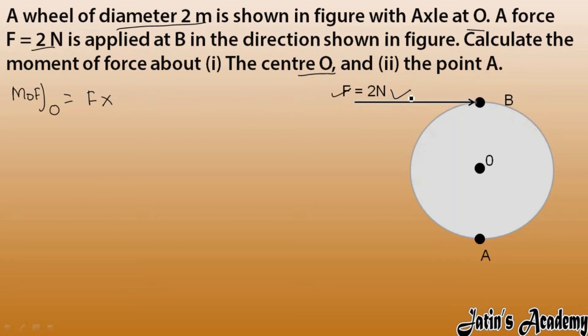Force is 2 Newtons. Perpendicular distance in this case is where the force is acting and where is the hinge point. This is the perpendicular distance. If complete diameter is 2 meters, the radius is simply 1 meter.